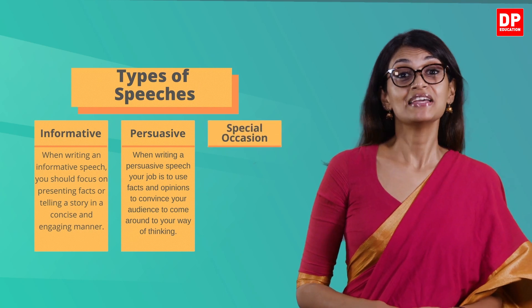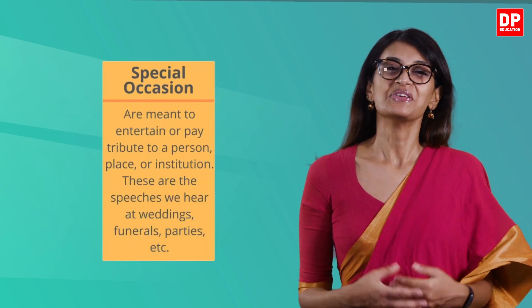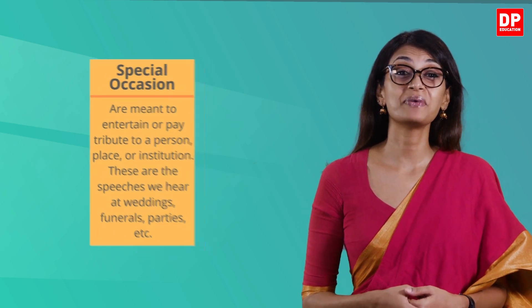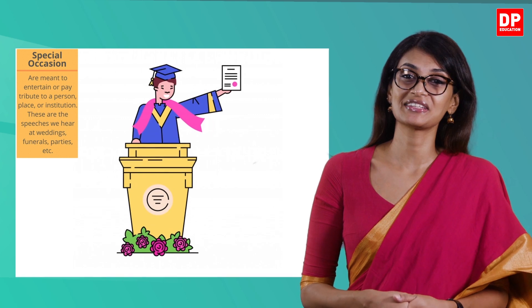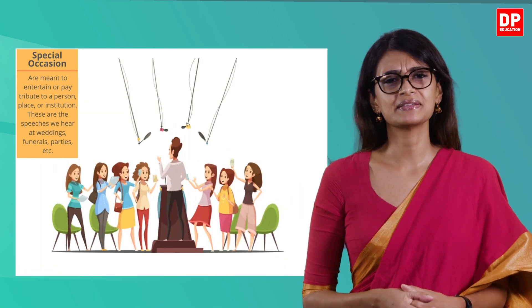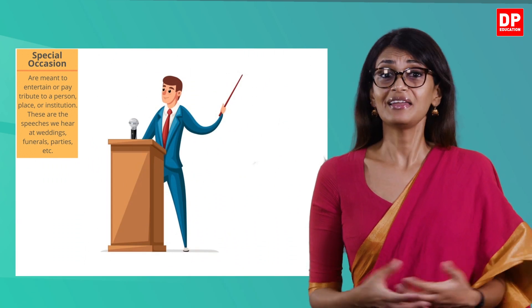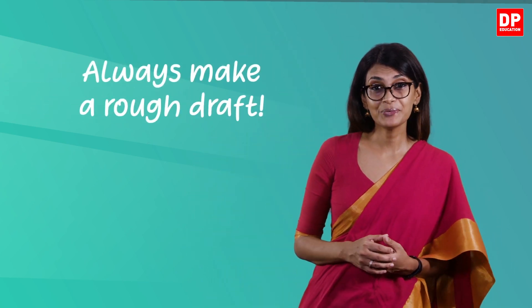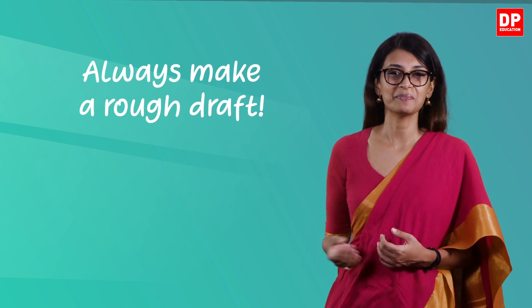The third type is a speech given at special occasions. We usually use this type when we want to pay tribute to a person, a place, or an institute. We hear such speeches at weddings, parties, and special school functions like Founders' Day. To make your speech engaging and ensure it encompasses all key points, it is absolutely necessary to make a rough draft — you can use a flow chart or a mind map.